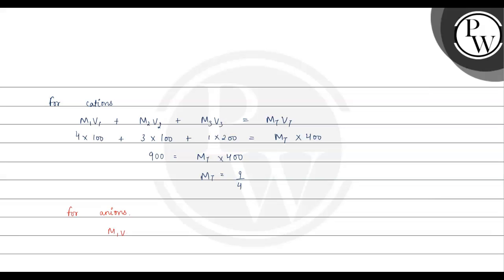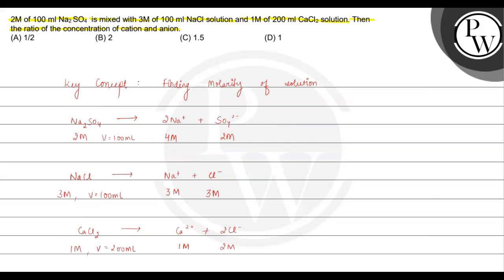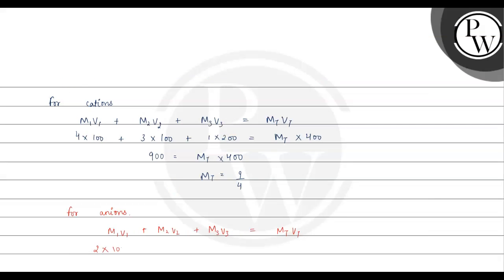Now applying the same formula for anions: M₁V₁ + M₂V₂ + M₃V₃ = Mₜotal × Vₜotal. Anion molarity 1 is 2 molar with volume 100 ml, anion molarity 3 is 2 molar with volume 200 ml. Adding up gives 900, and total volume is 400. So total anion molarity is also 9/4.